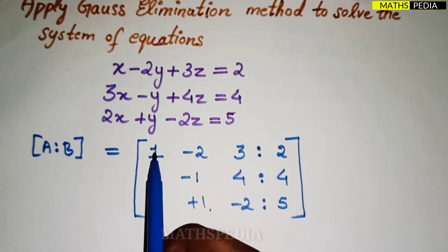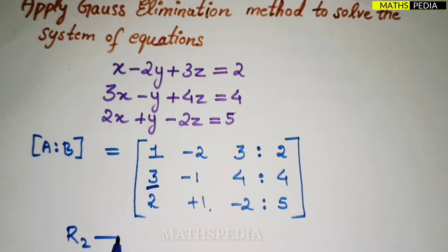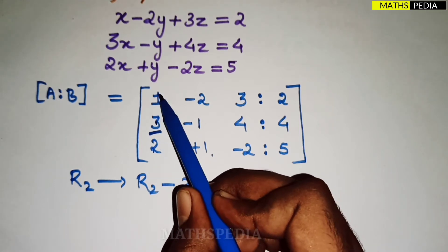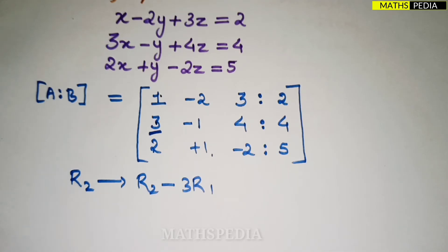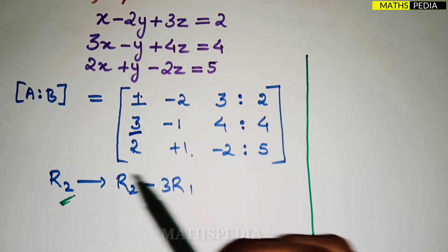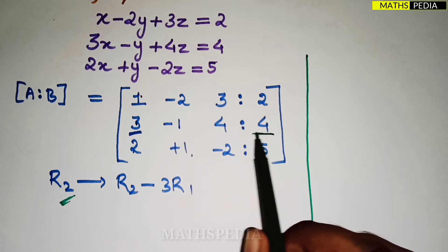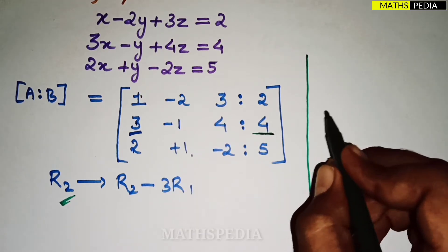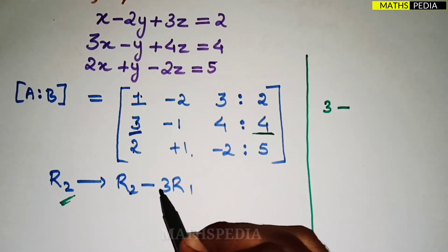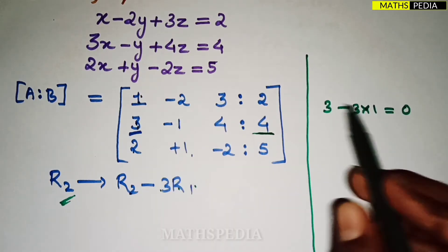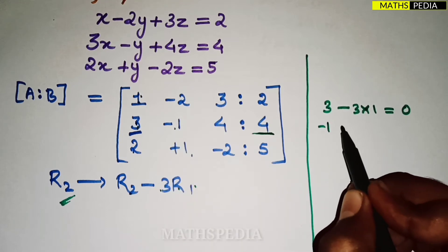To make 3 zero, since the leading element of row 1 is 1, we apply the operation R2 = R2 − 3×R1. Three times 1 is 3, so R2's first element becomes 3 − 3 = 0. Next element: minus 1 minus 3 times (minus 2) gives minus 1 plus 6, which equals 5.